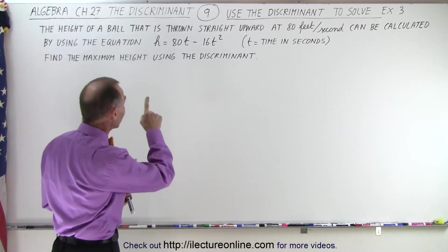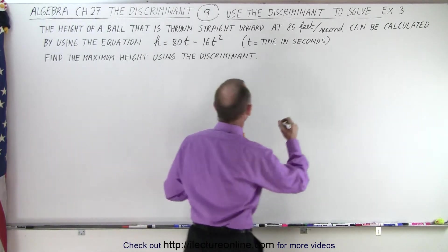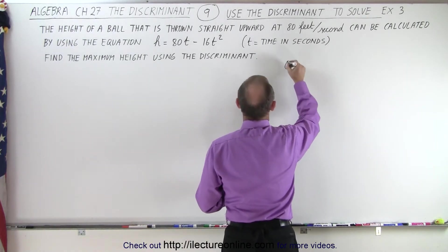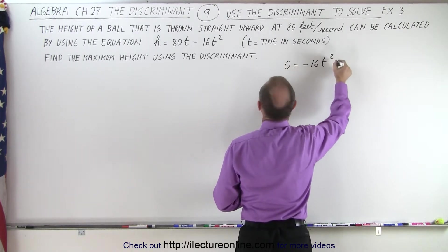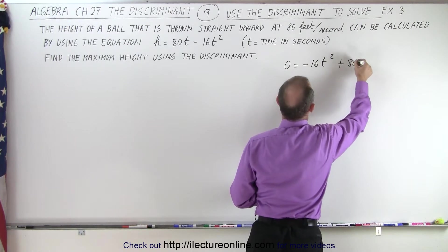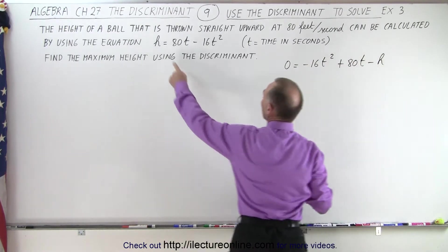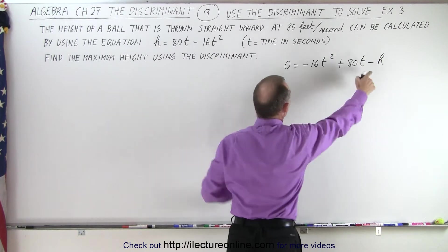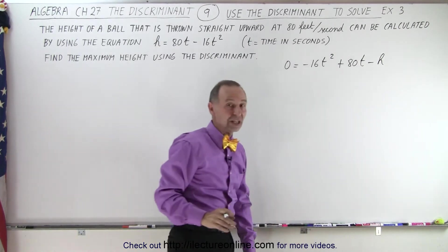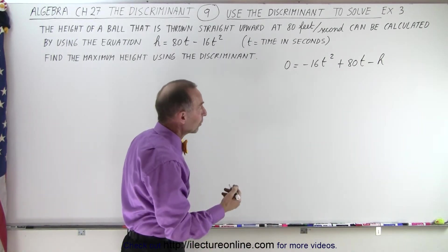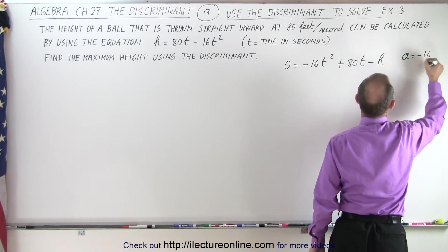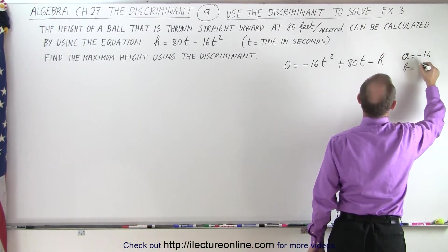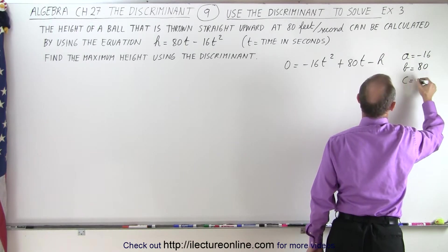What we're going to do is take that equation and write it as follows: 0 = -16t² + 80t - h. Simply by taking the h to the right side it becomes -h, and by interchanging the two terms, we can identify that a = -16, b = 80, and c = -h.